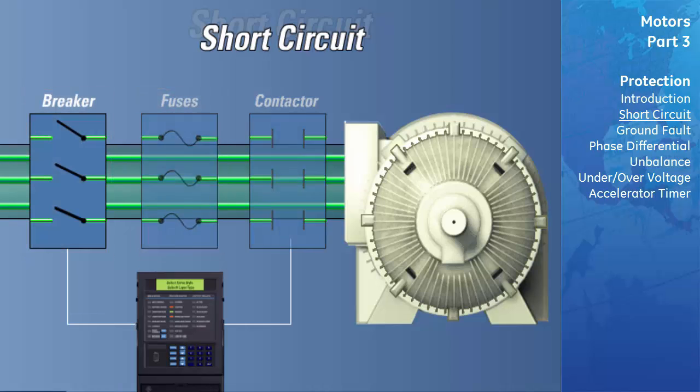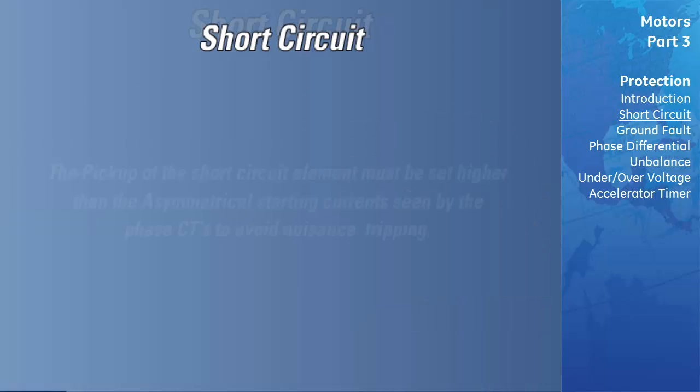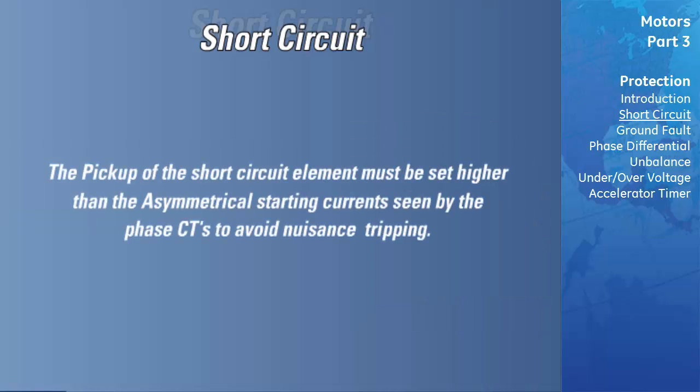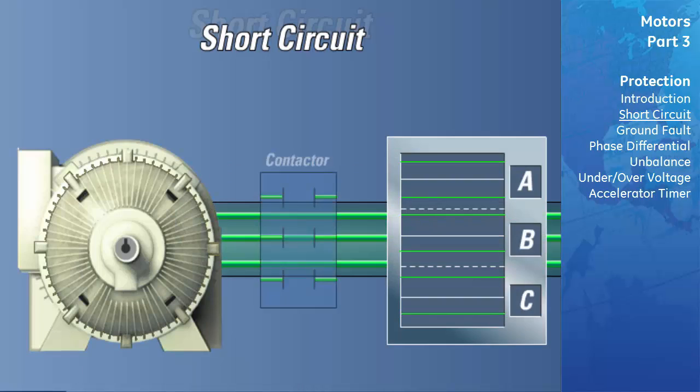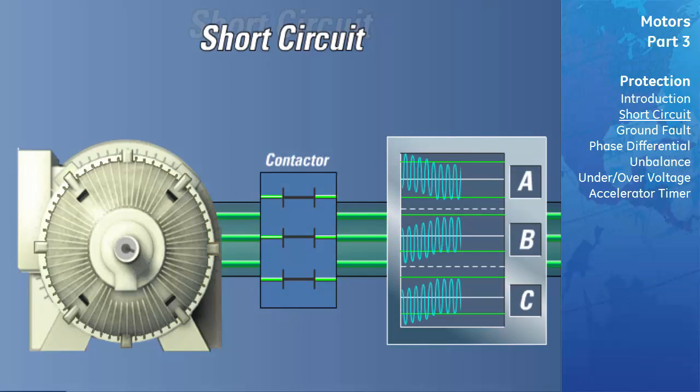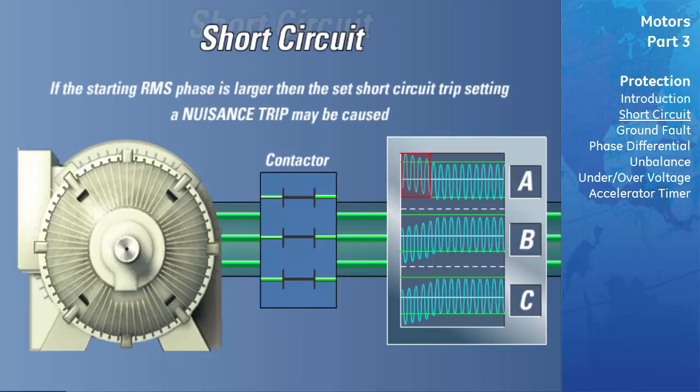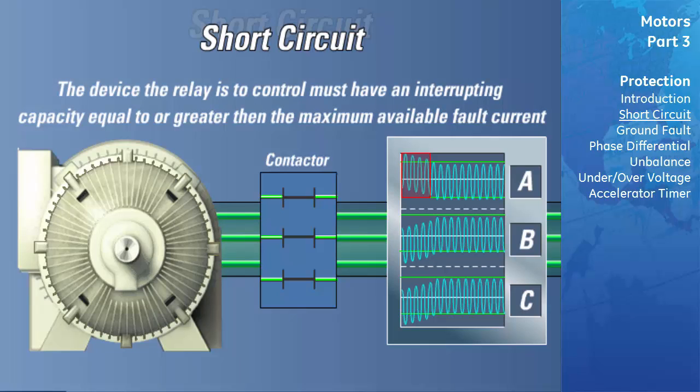These asymmetrical currents may cause one phase to see as much as 1.7 times the normal RMS starting current. As a result, the pickup of the short circuit element must be set higher than the maximum asymmetrical starting currents seen by the phase CTs to avoid nuisance tripping. The rule of thumb is to set the short circuit protection pickup to a value which is at least 1.7 times the maximum expected symmetrical starting current of the motor. This allows the motor to start without nuisance tripping. It is important to note that the device that the relay is to control under such conditions must have an interrupting capacity equal to or greater than the maximum available fault current.